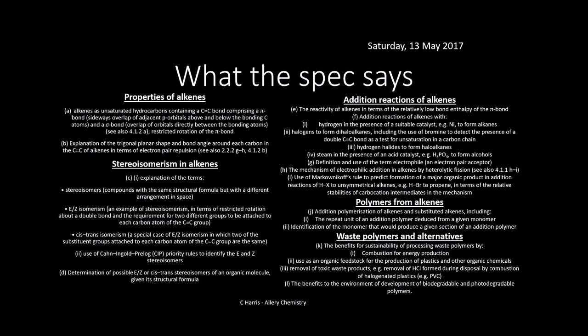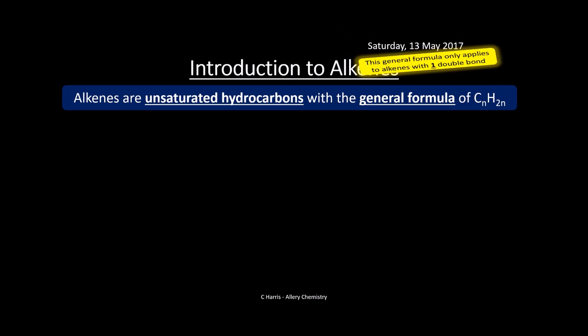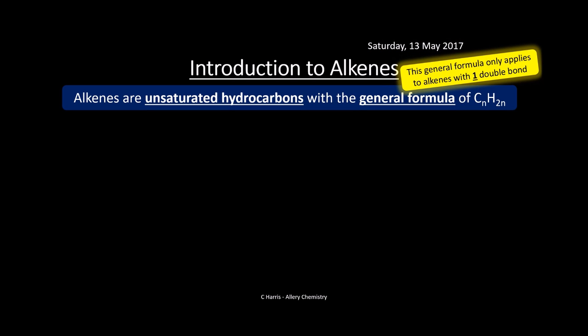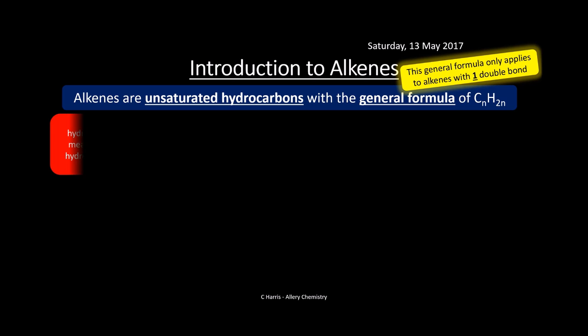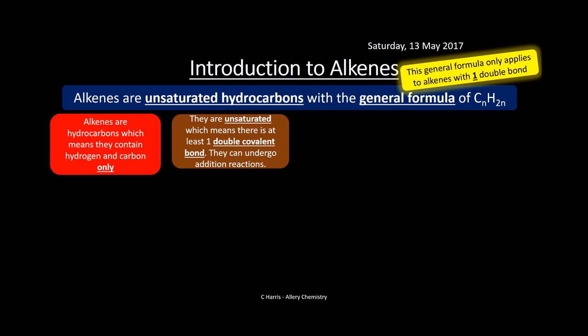These slides are specifically linked to OCR A and match the specification points listed. So let's have a look at Alkenes and what they are. These are unsaturated hydrocarbons with the general formula CnH2n. This general formula only applies if you have one double bond in the molecule. They are hydrocarbons containing hydrogen and carbon only, and being unsaturated means they have at least one double covalent bond and can undergo addition reactions.